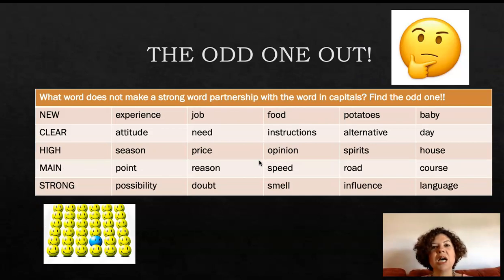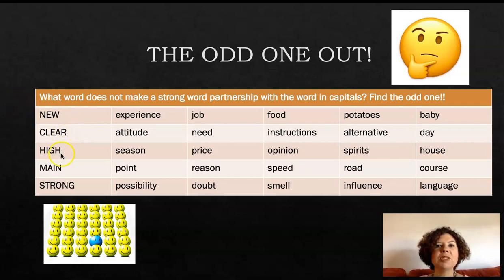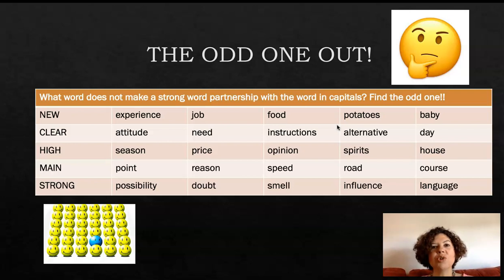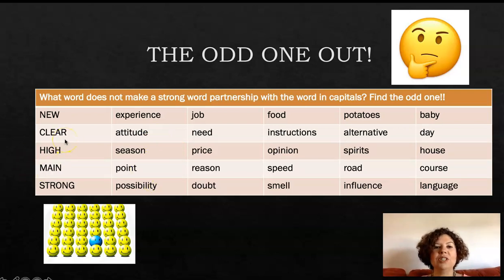Another quick example: find the odd one. You are already familiar with this kind of exercise. For this task, we will be using collocations. Students need to collocate the word in capital letters with the other words. For example, 'new': 'new experience', 'new job', 'new food', 'new potatoes', 'new baby'. All of these words create collocations, but there is only one that doesn't make a strong collocation or a strong word partnership — and that is 'potatoes'. For the next one, 'clear attitude', 'clear need', 'clear instructions', 'clear alternative', 'clear day' — which one is the odd one? Find it, teachers, and write it in the comments.